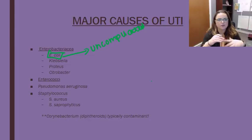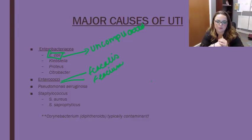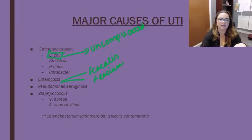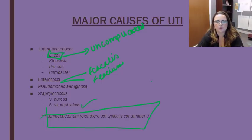Other common causes include Klebsiella species, Proteus, and Citrobacter. The Enterococci — E. faecalis and E. faecium — both can be causes of UTI, and remember they have a high incidence of antibiotic resistance as well. Pseudomonas can actually be a pretty common cause of UTI, particularly in hospital settings. Staphylococci, particularly Staphylococcus saprophyticus, is also a cause. It's important to note that you might see Corynebacterium in your urine samples — normally these are a contaminant, but you certainly want to rule that out.